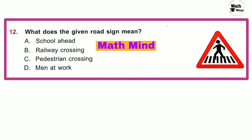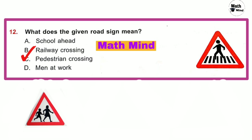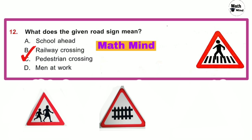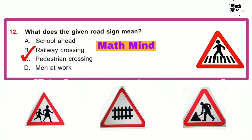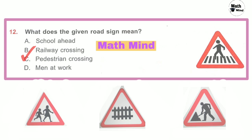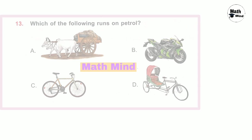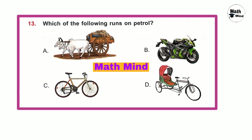Question number 12: What does the given road sign mean? Option C is correct — this is a pedestrian crossing. Other signs shown are: school ahead, railway crossing, and traffic signal not working. Question number 13: Which of the following runs on petrol? Option A — bullock cart, option B — motorcycle, option C — cycle, option D — rickshaw.